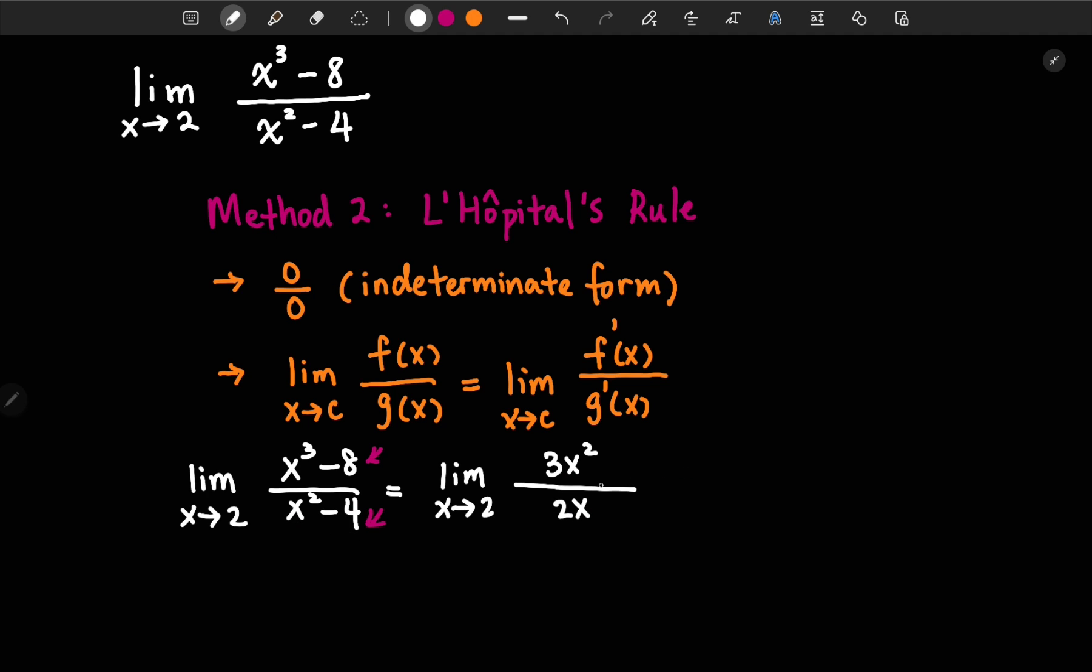And let's simplify the top and bottom. We would have the limit as x goes to 2. We cancel out the common terms. Then we have 3x over 2.